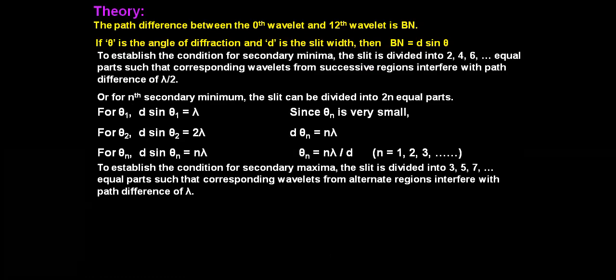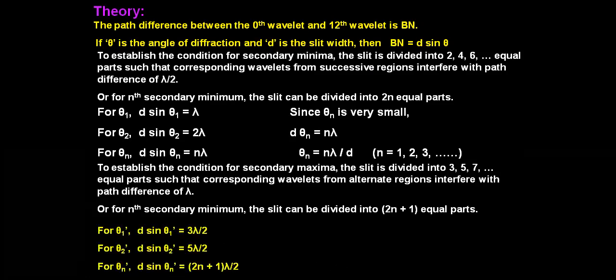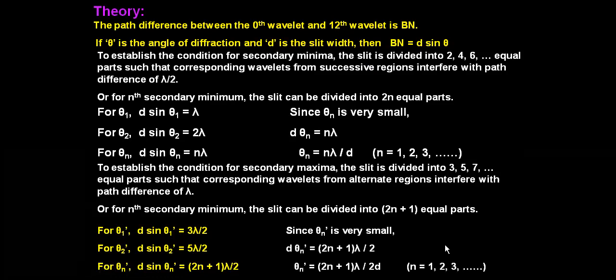To establish the condition for secondary maxima, the slit is divided into 3, 5, 7 equal parts — odd multiples — such that corresponding wavelets from alternate regions interfere with path difference of lambda. For the nth secondary maxima, the slit is divided into 2n plus 1 equal parts. So for theta 1 dash: d sin theta 1 dash equals 3 lambda by 2. For theta 2 dash: d sin theta 2 dash equals 5 lambda by 2. For theta n dash: d sin theta n dash equals (2n+1) lambda by 2. Since theta n dash is very small, d theta n equals (2n+1) lambda by 2, or theta n dash equals (2n+1) lambda upon 2d, which is the condition for secondary maxima.